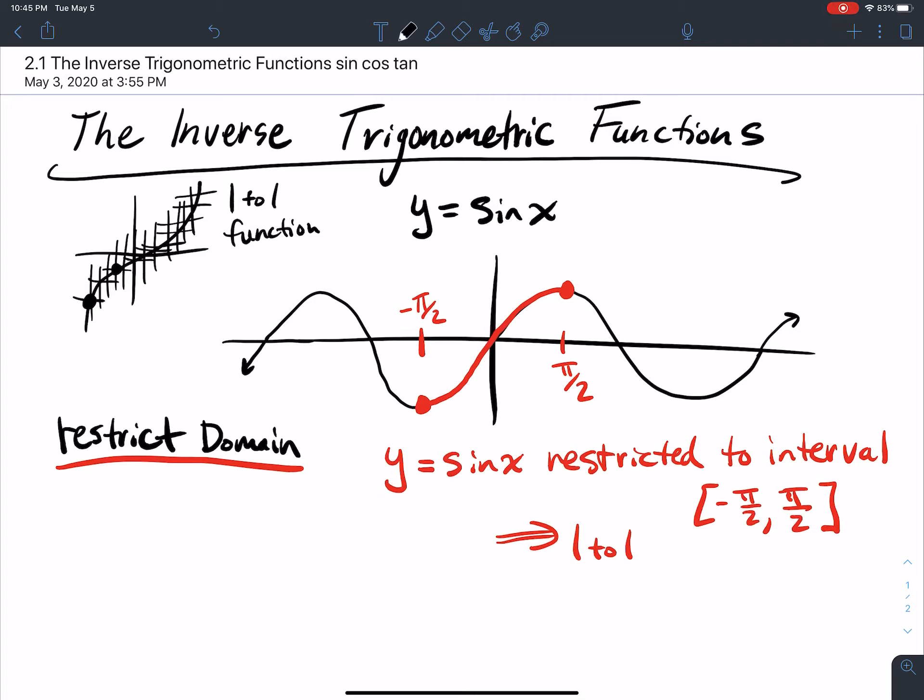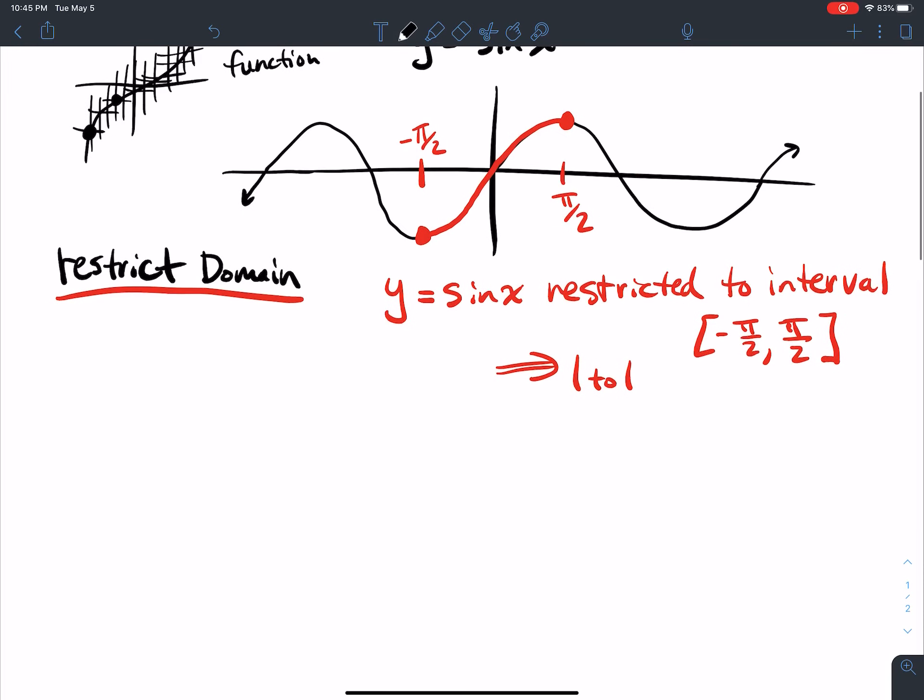So an equation for an inverse of y equals sine of x is obtained by interchanging x and y. We're going to swap x and y everywhere. So y equals sine of x becomes x equals the sine of y. Now, y is stuck between what values? y is stuck between pi over 2 and negative pi over 2, just as our interval says up here.